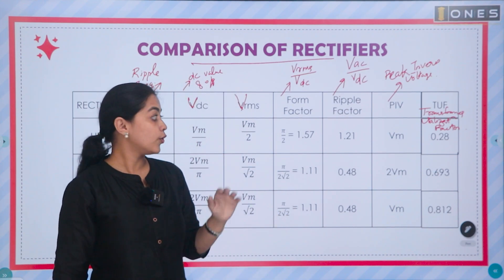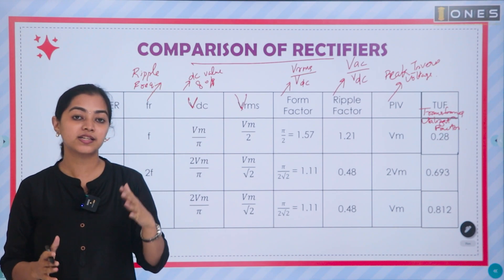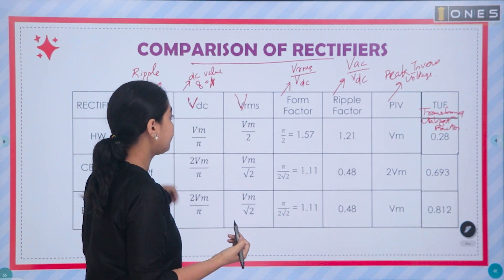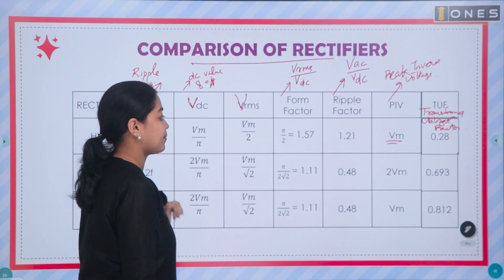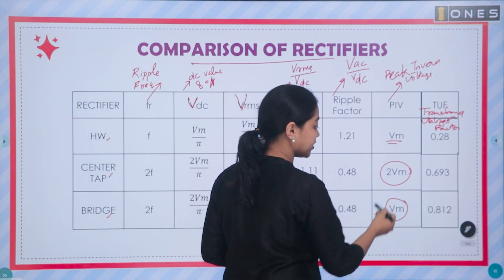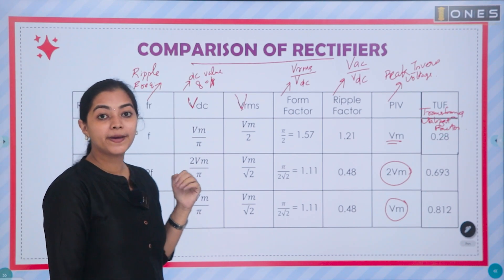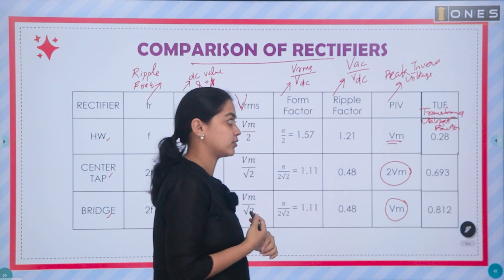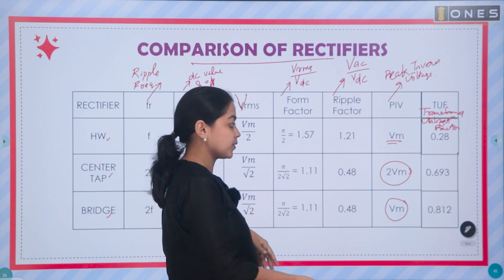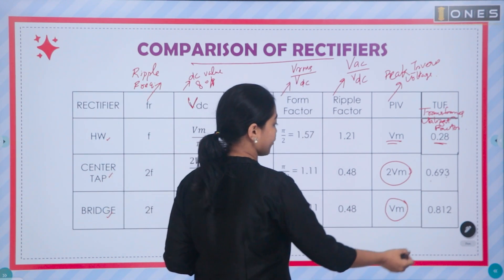The peak inverse voltage for a half-wave rectifier is VM. For a center-tap rectifier, it is 2VM. For a bridge rectifier, it is again VM. The transformer utilization factor for a center-tap rectifier is 0.69, and for a bridge rectifier it is 0.812.